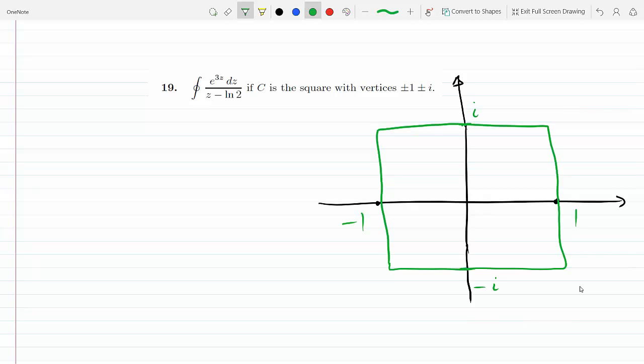Now first thing first, this guy here e^(3z), is this analytic? Yes, e^(3z) is analytic everywhere because no matter where you approach from, the derivatives are all the same.